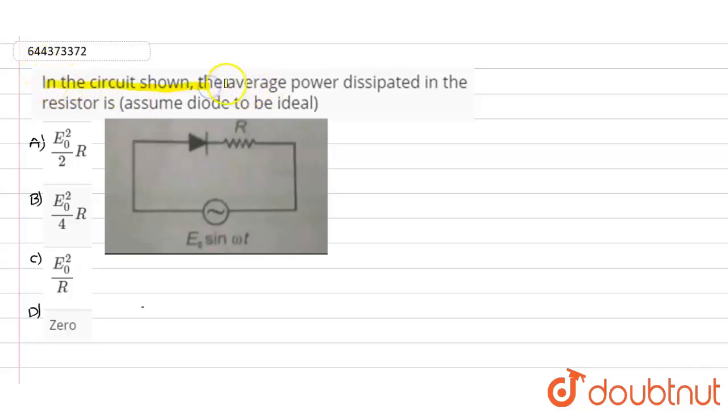So here in this question it is given that in the circuit shown, the average power dissipated in the resistor is. So here we need to find out the value of the average power dissipated in the resistor, and he is asking us to assume the diode to be ideal.